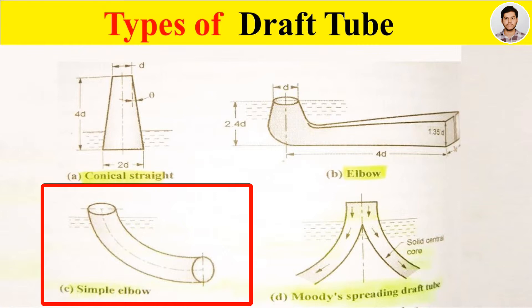Next is a simple elbow draft tube. It has circular cross section throughout from inlet to outlet, as shown in the figure. Elbow type draft tubes are used for Kaplan turbines. It is made up of concrete with steel lining at inlet. Such draft tube has efficiency up to 60 percent.